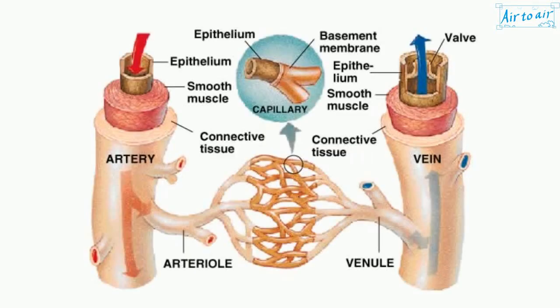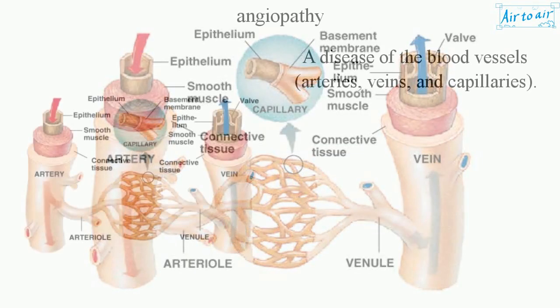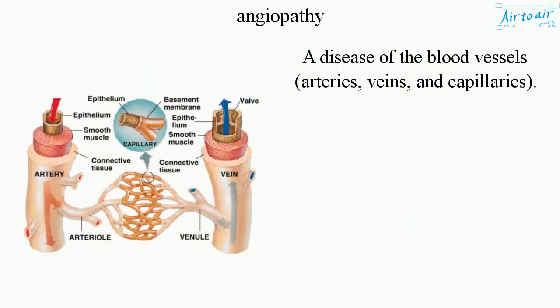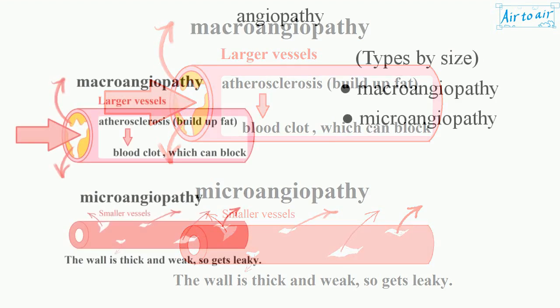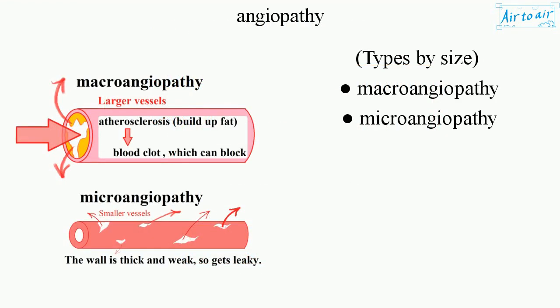Angiopathy — a disease of the blood vessels, arteries, veins, and capillaries. Types by size: Macroangiopathy and Microangiopathy.